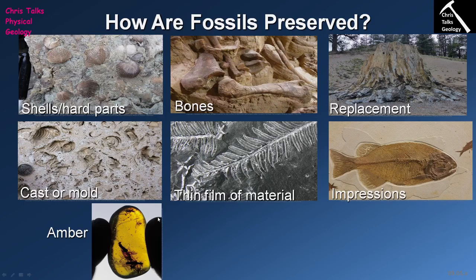Here we have a fossil preserved in amber — an example of an unaltered body fossil, because the organism encased in the amber hasn't decayed, broken down, or changed over time. Amber is antibacterial, so anything that might try to destroy the fossil is killed by it. Fossils preserved in amber tend to come from the Cretaceous at the oldest, since amber isn't a particularly robust material and is easily damaged and lost from the rock record.